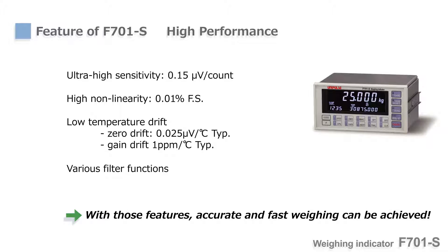F701S is equipped with an amplifier for load cells which has high sensitivity, high non-linearity, low temperature drift, and filter functions. With those features, accurate and fast weighing performance can be achieved.